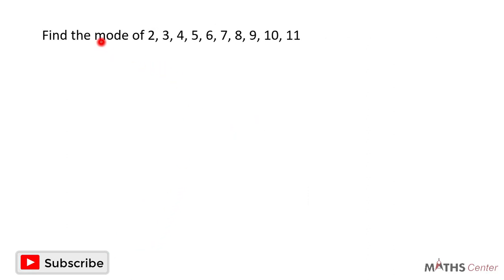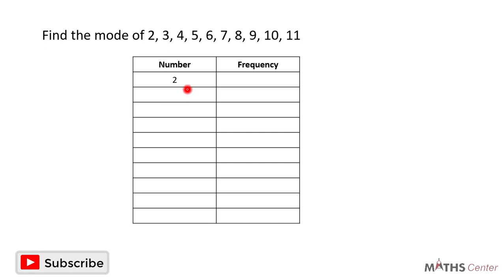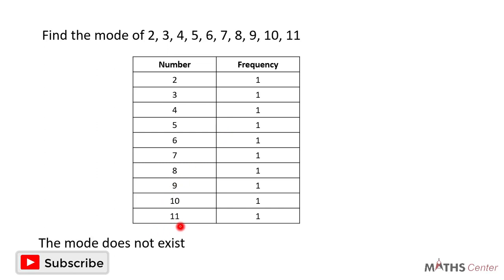Let's consider another question. Find the mode of this set of numbers. The numbers are 2, 3, 4, 5, 6, 7, 8, 9, 10, and 11. Going through them, you can see that all of them occur just once, so every single one of them has a frequency of 1. We have learned that if this is the case, the mode does not exist. If you have a distribution where every number occurs just once, the mode does not exist.